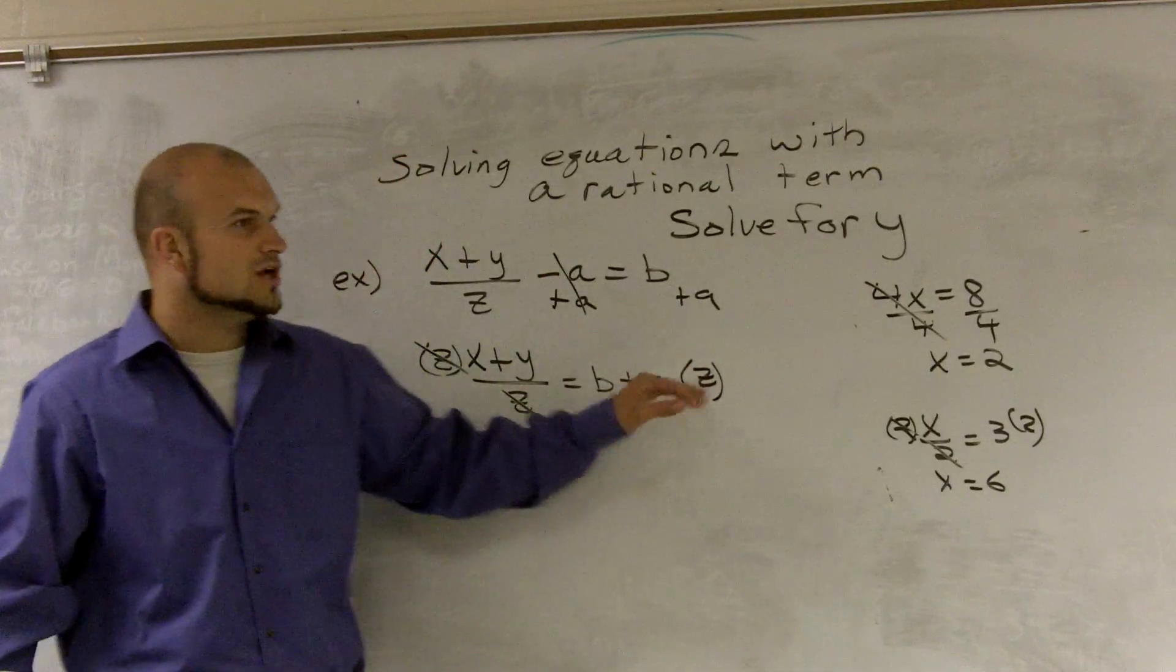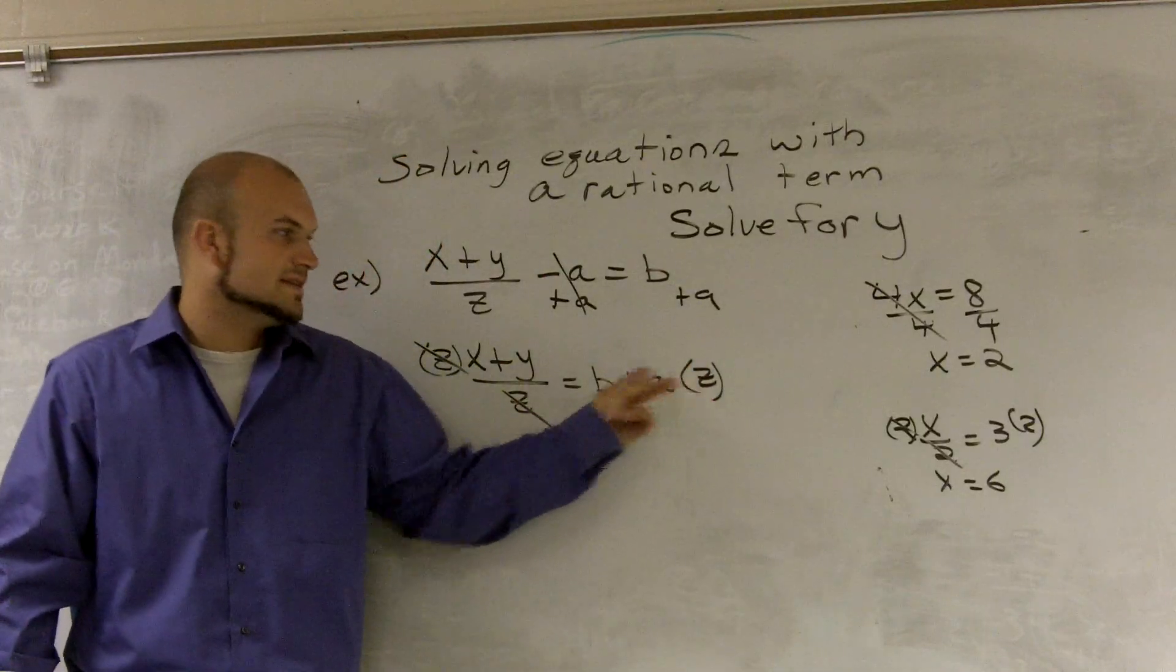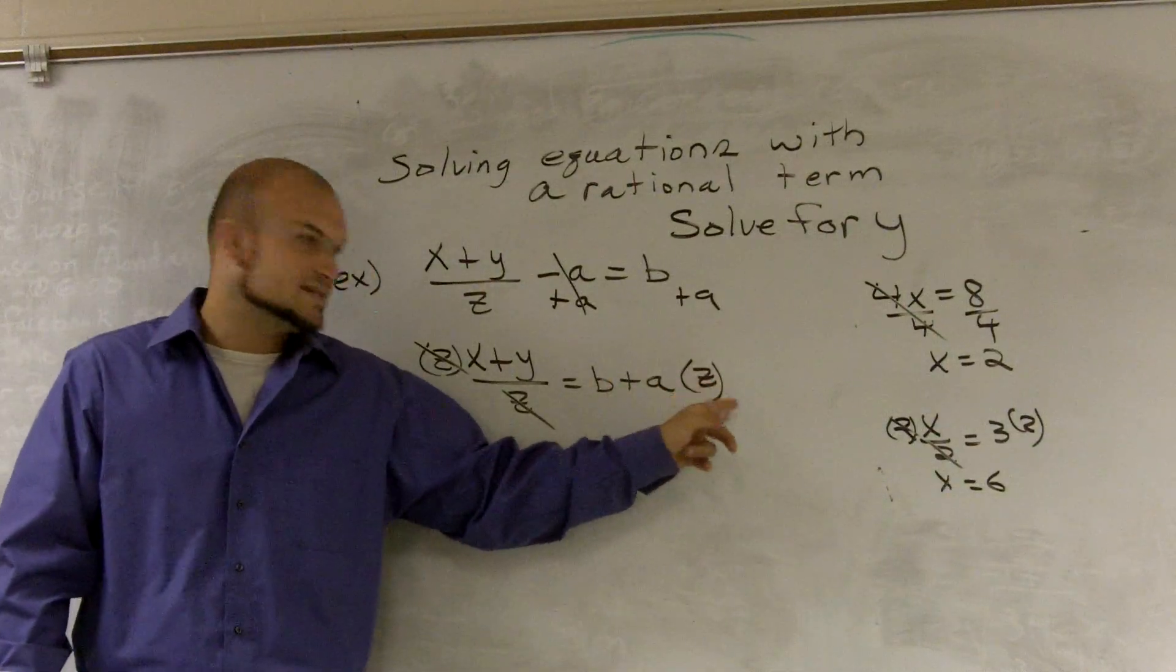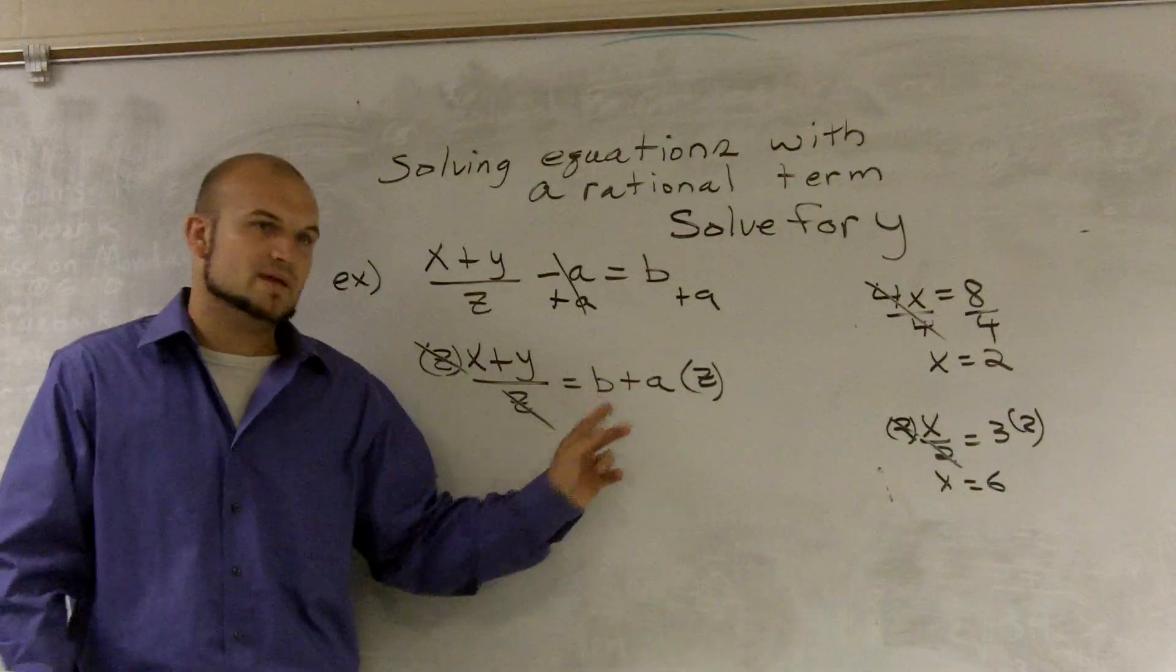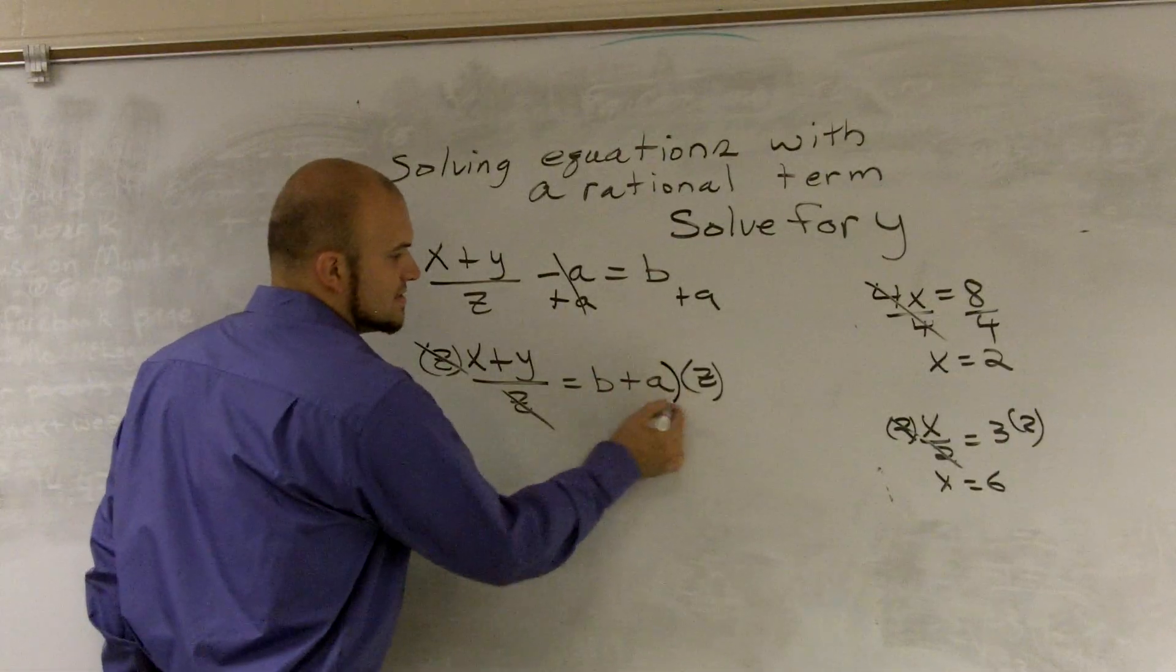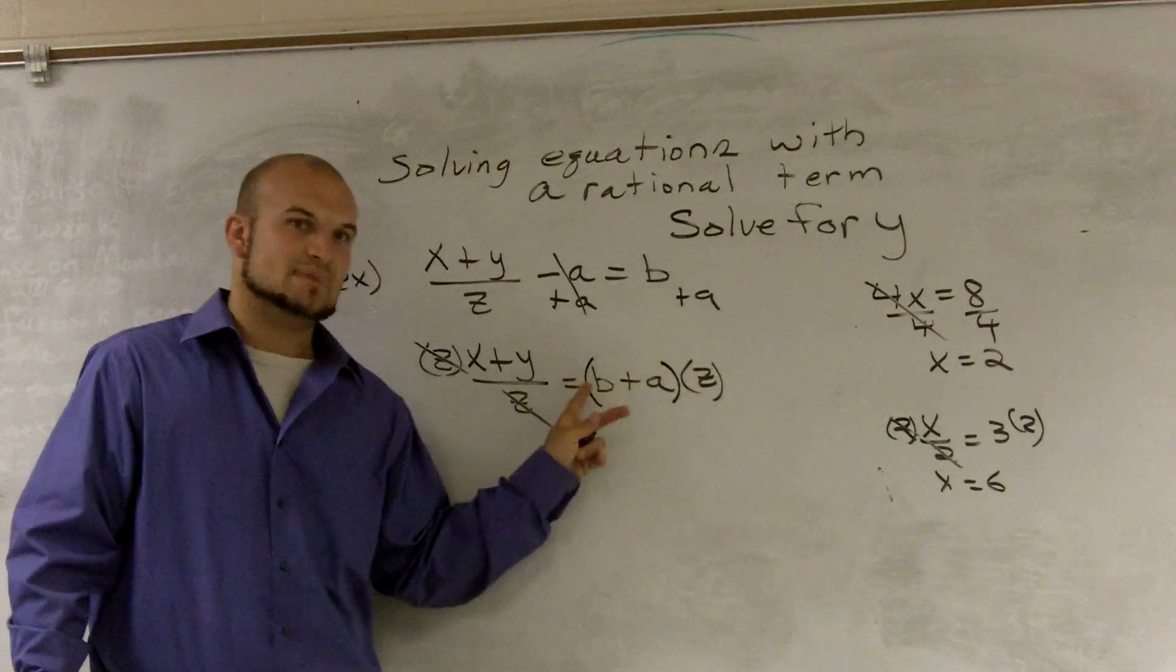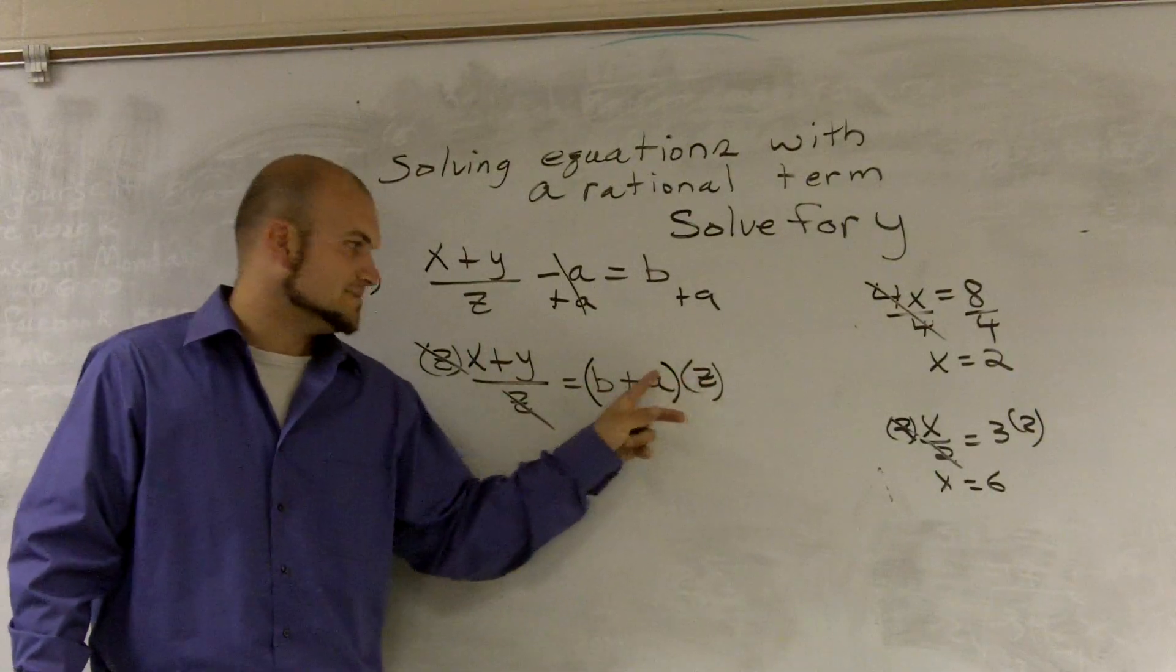Again, we have to be careful, though. When we show that we're multiplying z on the side, we have to notice that there's two different terms. So you're not multiplying the z just by the a or the z just by the b. But we have to put parentheses around that b over a to show that we're multiplying that z times the b and multiplying that z times the a.